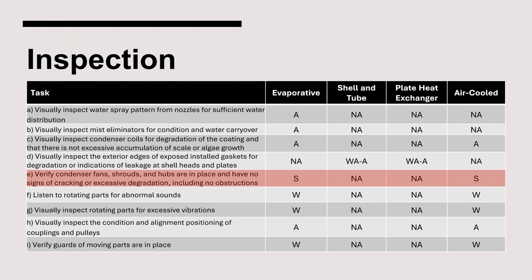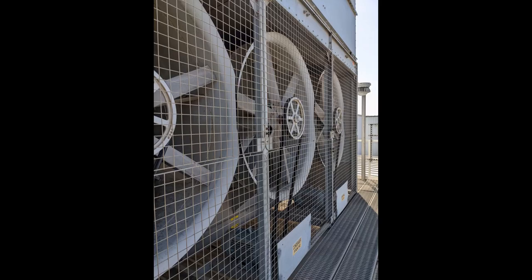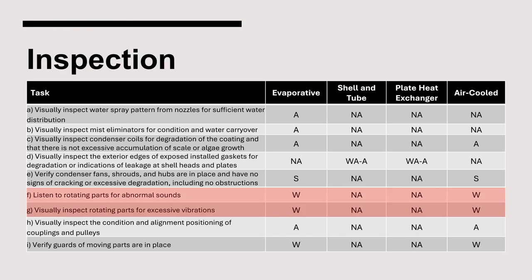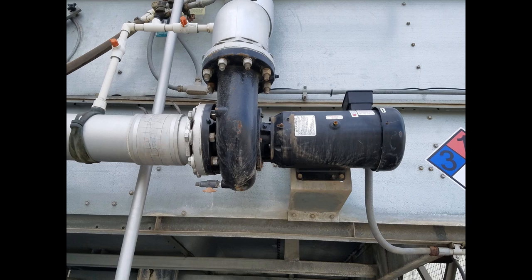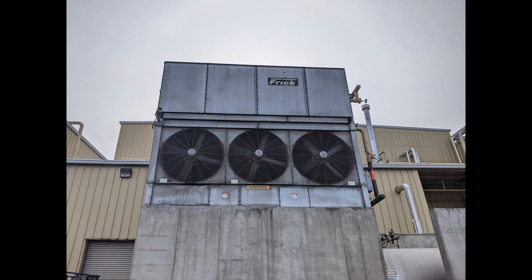Next, inspection items are to verify the condenser fans, shrouds, and hubs are in place and in good condition. The couplings and pulleys should also be inspected to ensure they are in good condition and proper alignment. Here we can see a properly guarded condenser with the fan shroud in place. On a weekly basis, listen to rotating parts for abnormal sounds and excessive vibrations. Additionally, verify guards of moving parts are in place. Each pump and fan shaft should be properly guarded. Visually inspect that supports are in place for each condenser. Condenser supports are often constructed of concrete or steel.